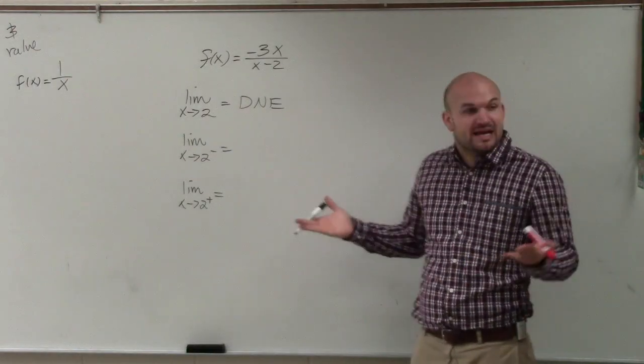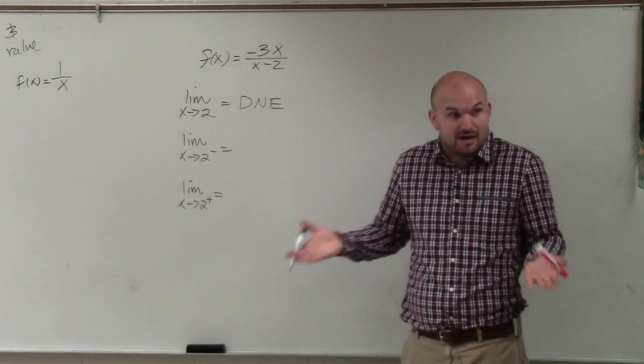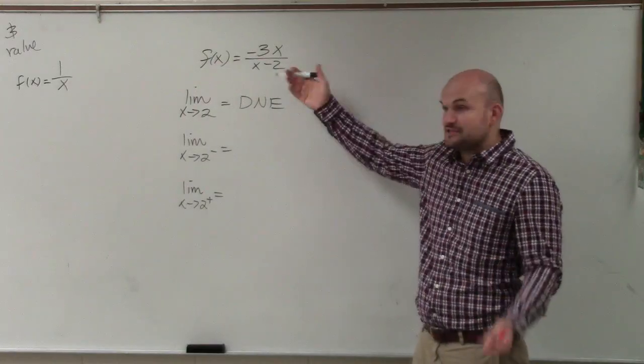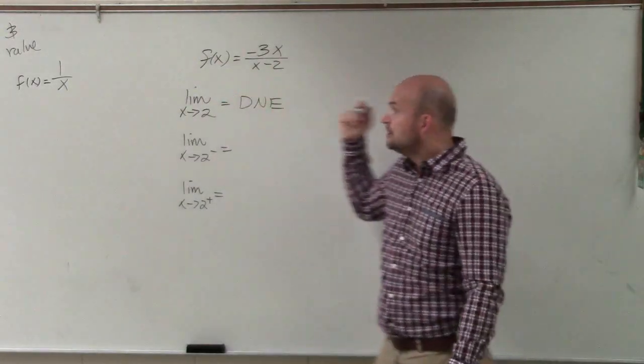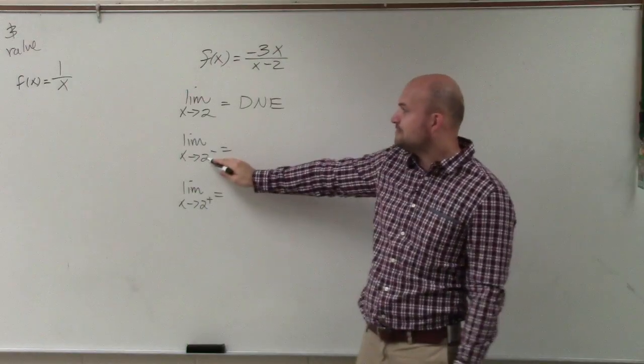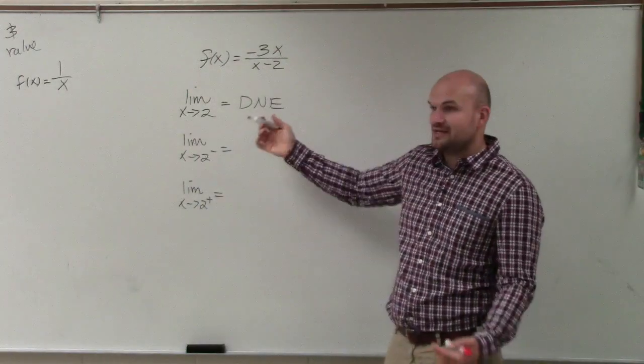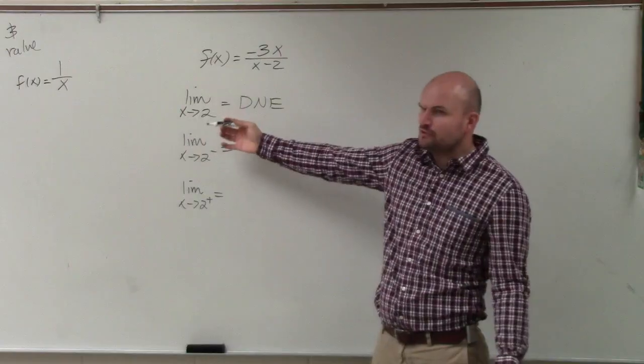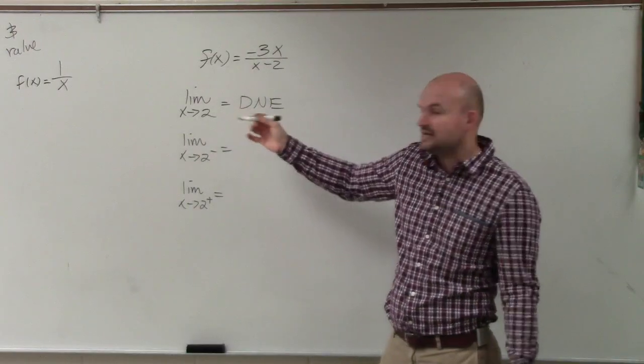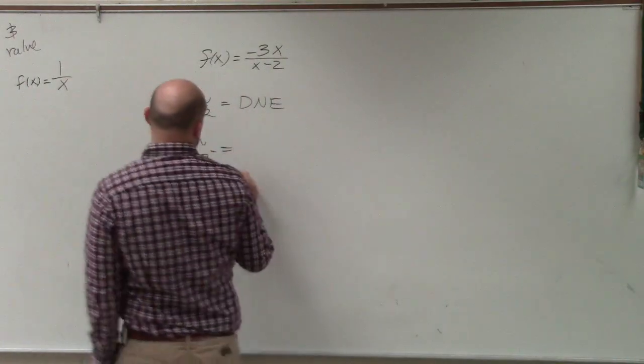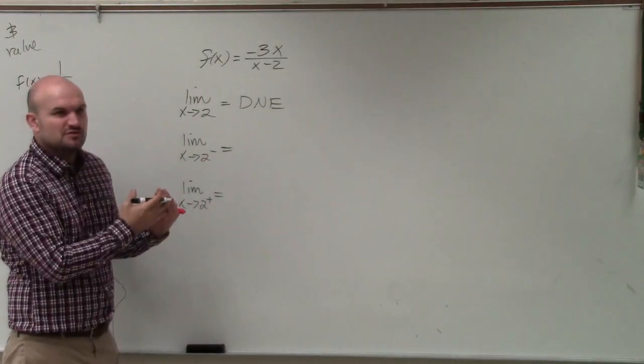Now, I don't know the behavior of this graph. It's not one of my parent functions that I just wrote on the board. So what we can do, though, is from the left hand limit is pick a number that's to the left of 2, really close to 2, but not to 2. So let's evaluate for what's a number that's really close to 2.